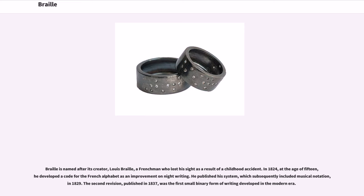Braille is named after its creator, Louis Braille, a Frenchman who lost his sight as a result of a childhood accident. In 1824, at the age of 15, he developed a code for the French alphabet as an improvement on night writing. He published his system, which subsequently included musical notation, in 1829.